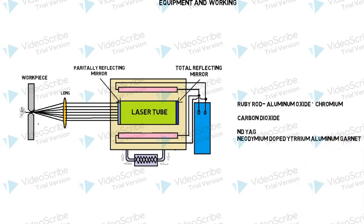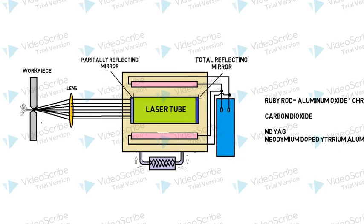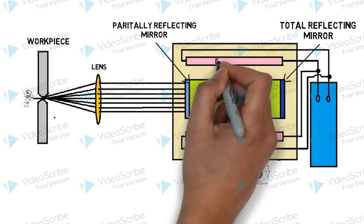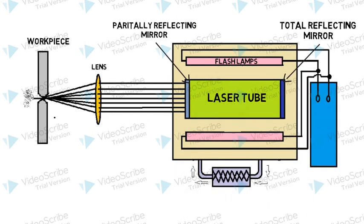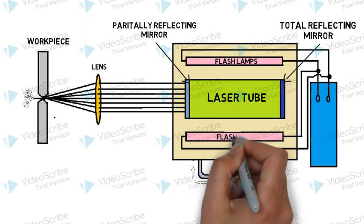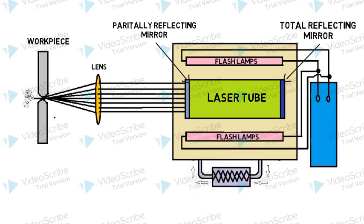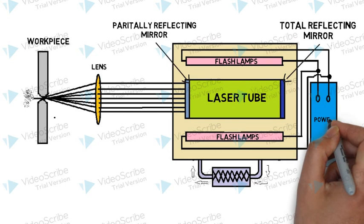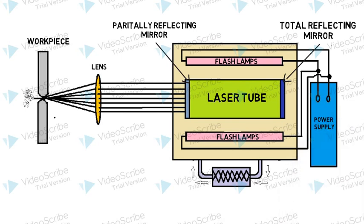Then the laser tube is fitted with flash lamps for pumping of energy into the lasing material on either side. These flash lamps are operated by the power supply. Sometimes the whole setup is attached with a cooling system.